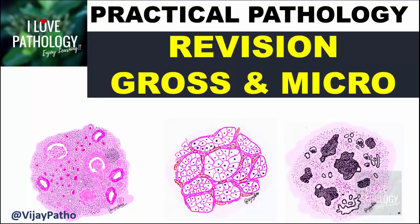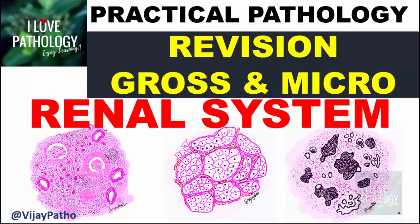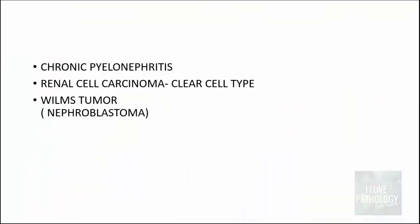Welcome to this short tutorial from Pathology Made Simple at ilovepathology.com. This is in continuation with the practical pathology series. In this session I will be discussing the gross and microscopic features of important slides you will be facing during practical examination. The system selected today is the renal system, covering three important conditions: chronic pyelonephritis, renal cell carcinoma of the clear cell type, and Wilms tumor.